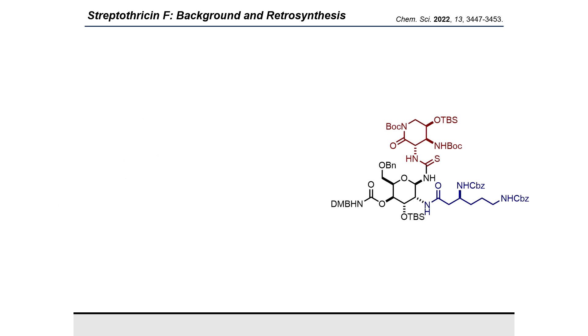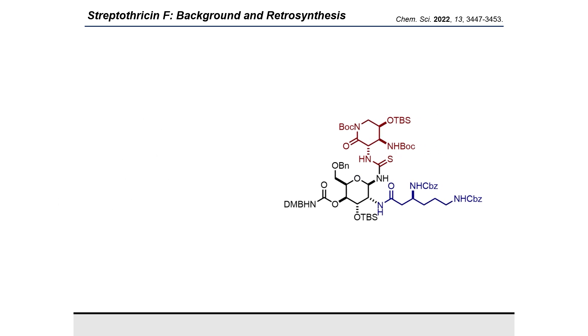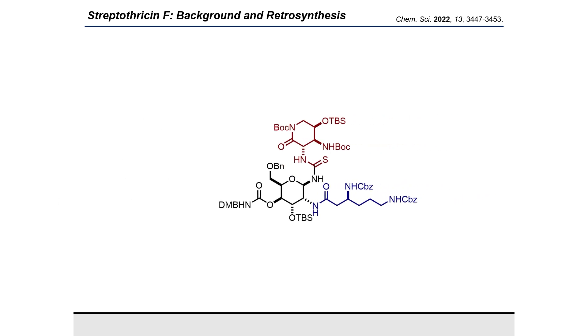Ultimately, we arrive at our thiourea through stepwise fragment couplings of the gulosamine to the beta-lysine fragment, followed by coupling to the streptolidine isothiocyanate fragment.